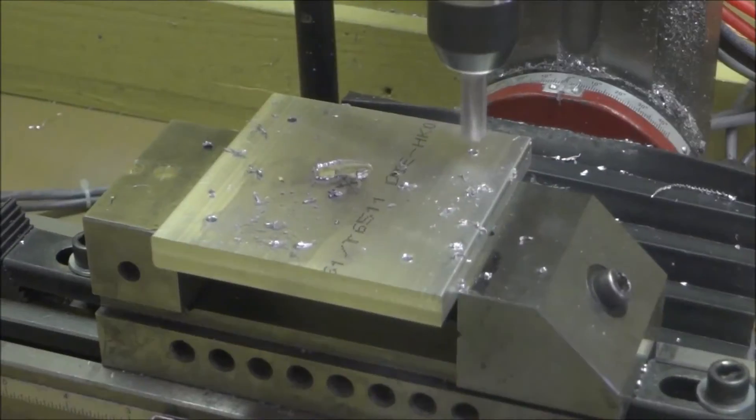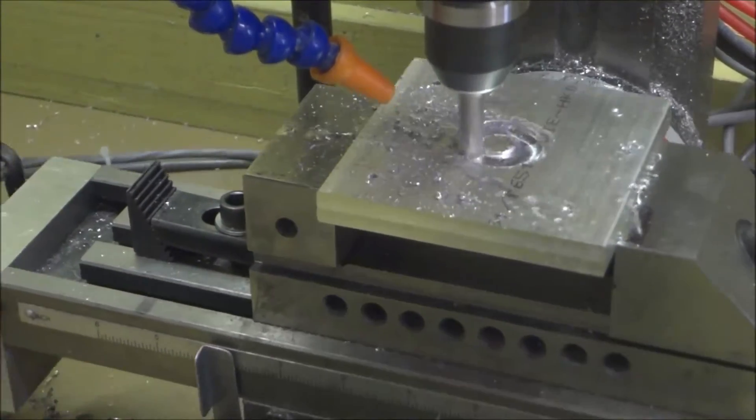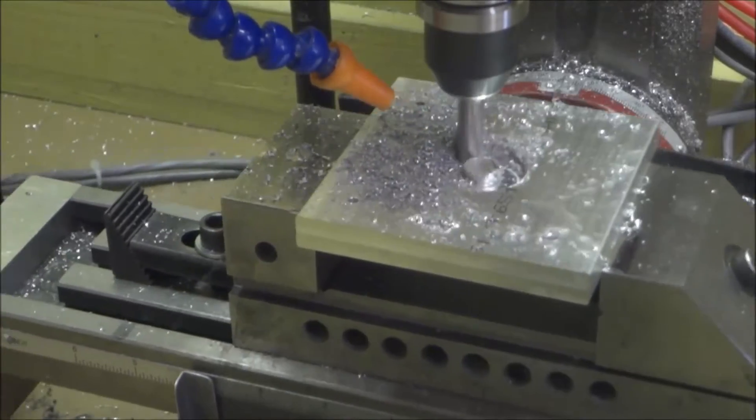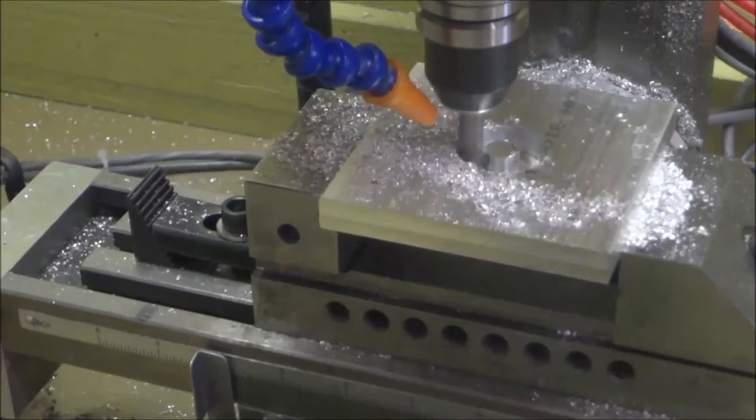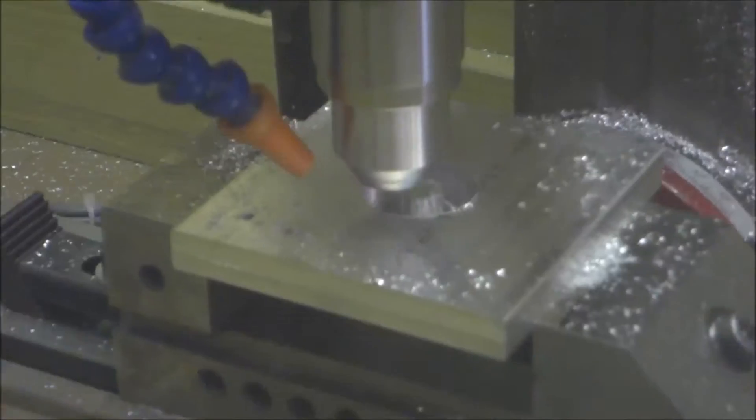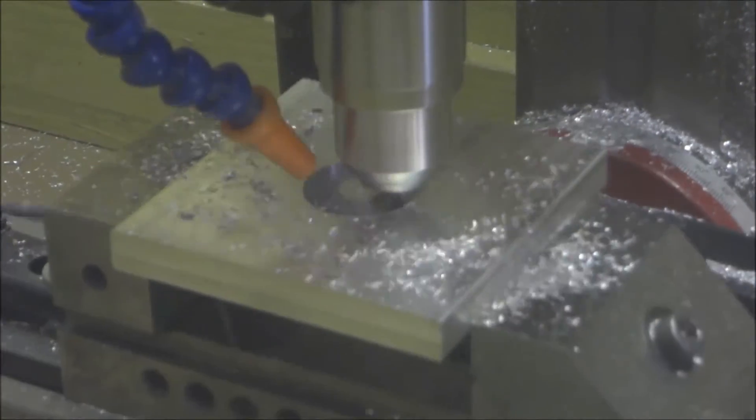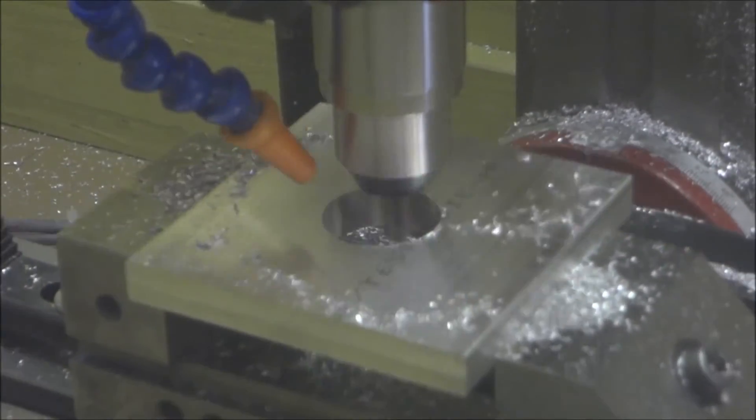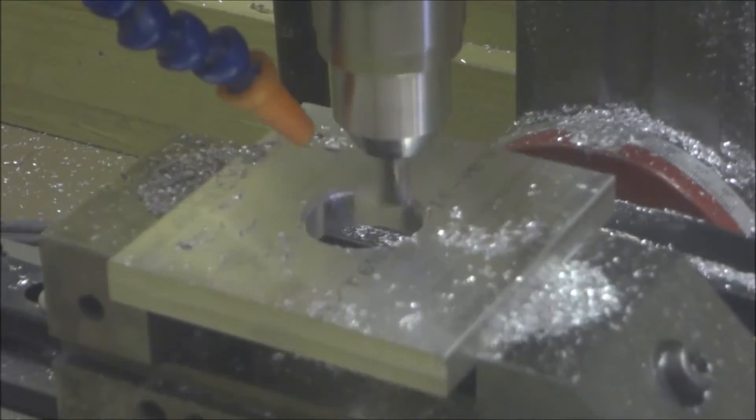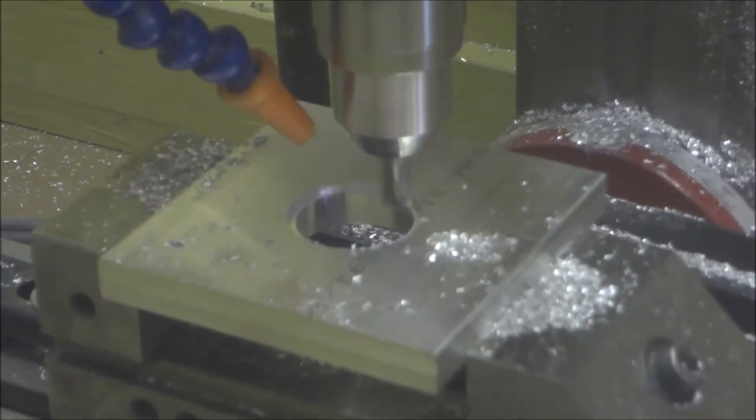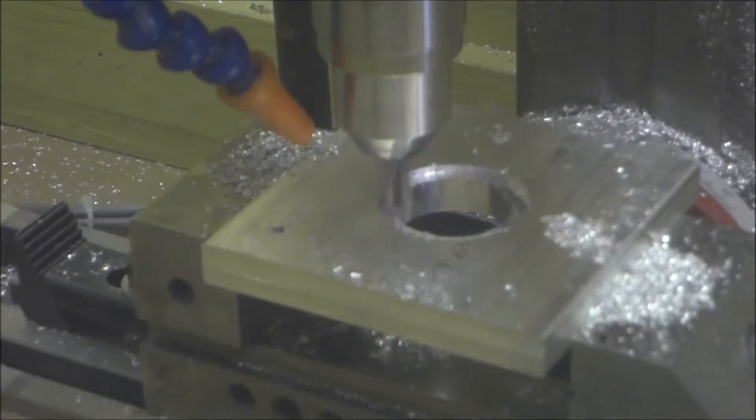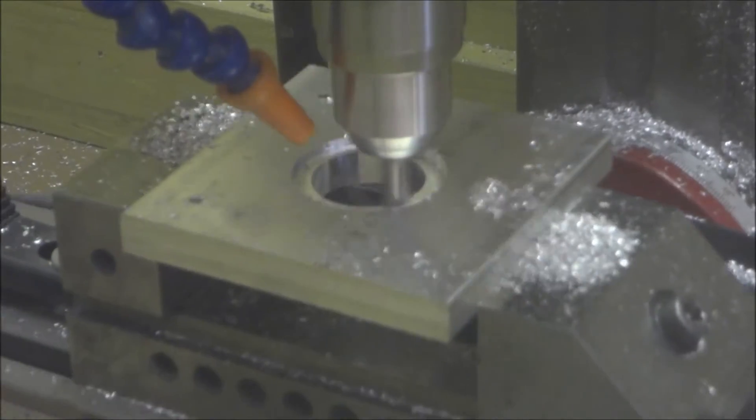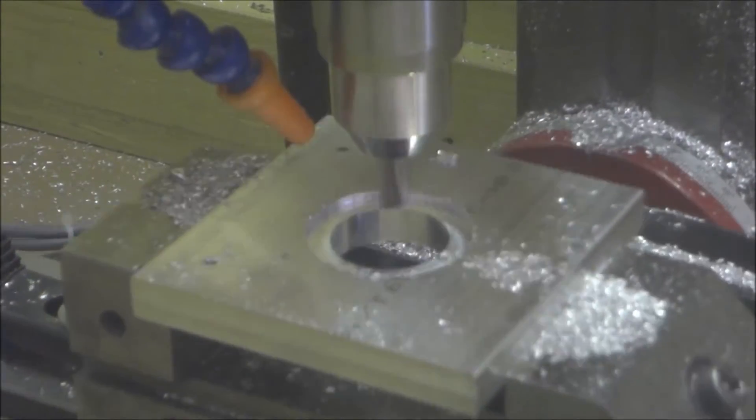But rather than manually machining both of them I thought I would do one on the X2 and manually machine one. So I drew it all up in Fusion 360 and I wanted to just test out the CAM and CAD g-code that Fusion 360 spit out.